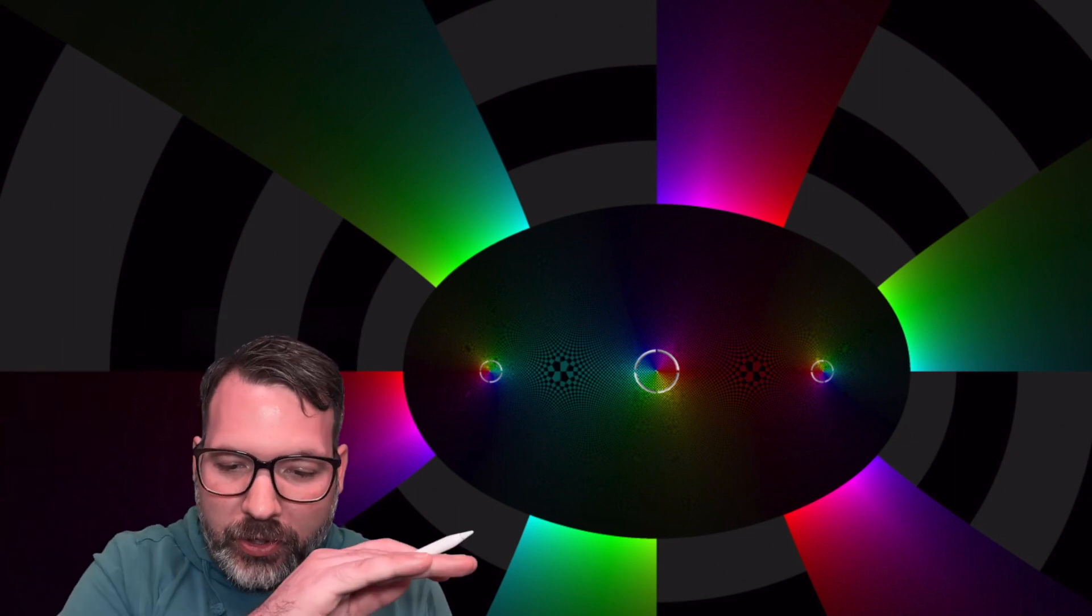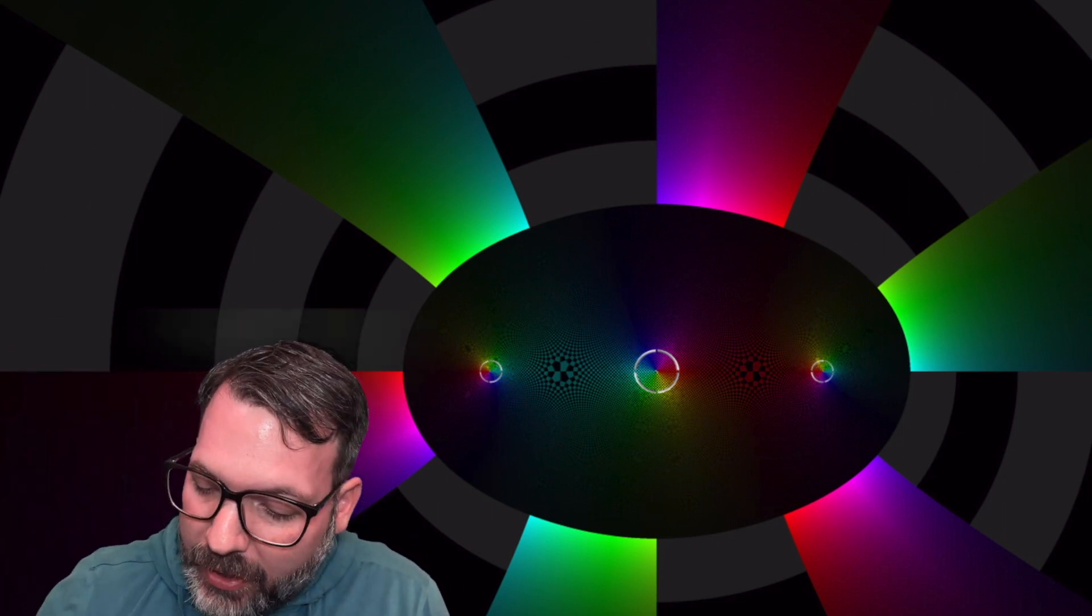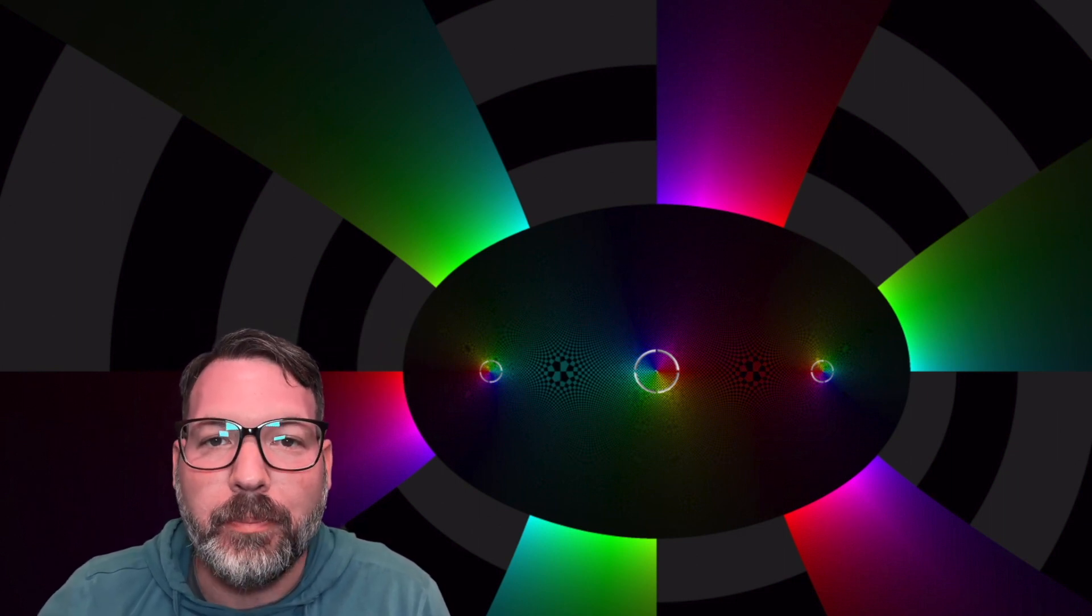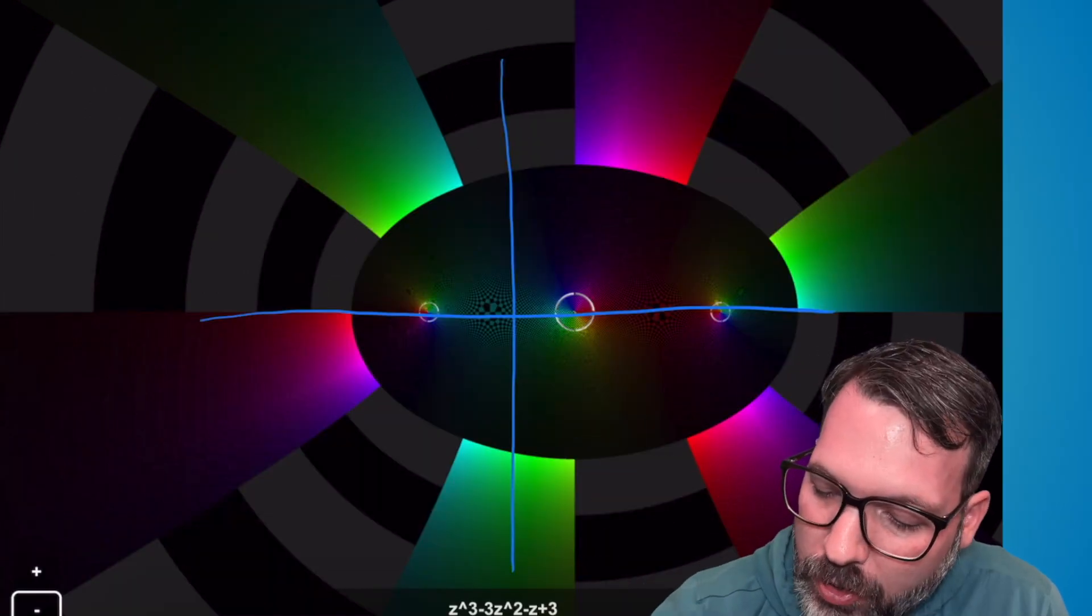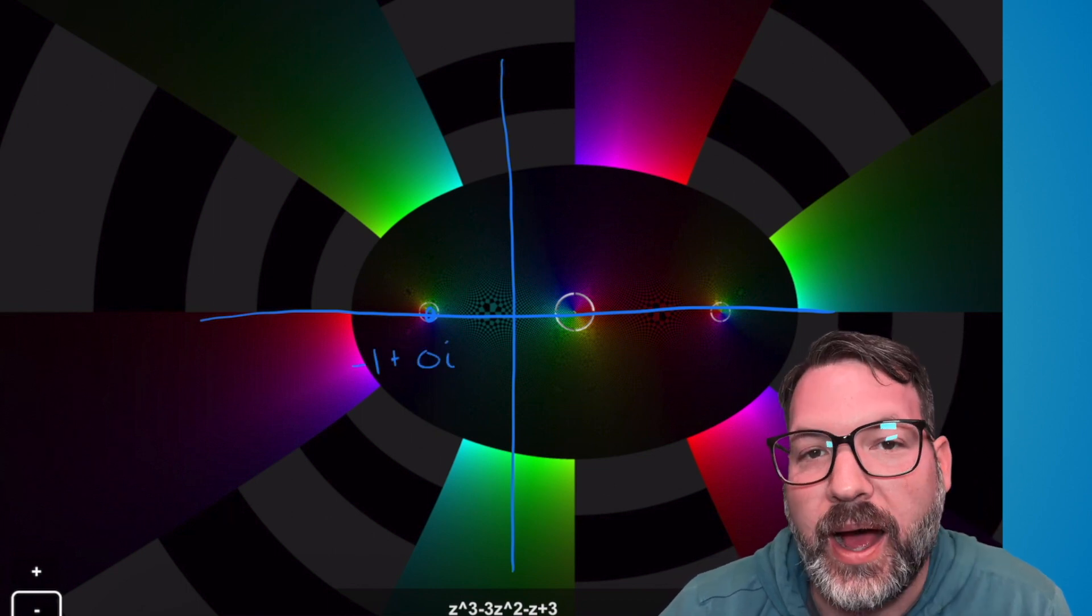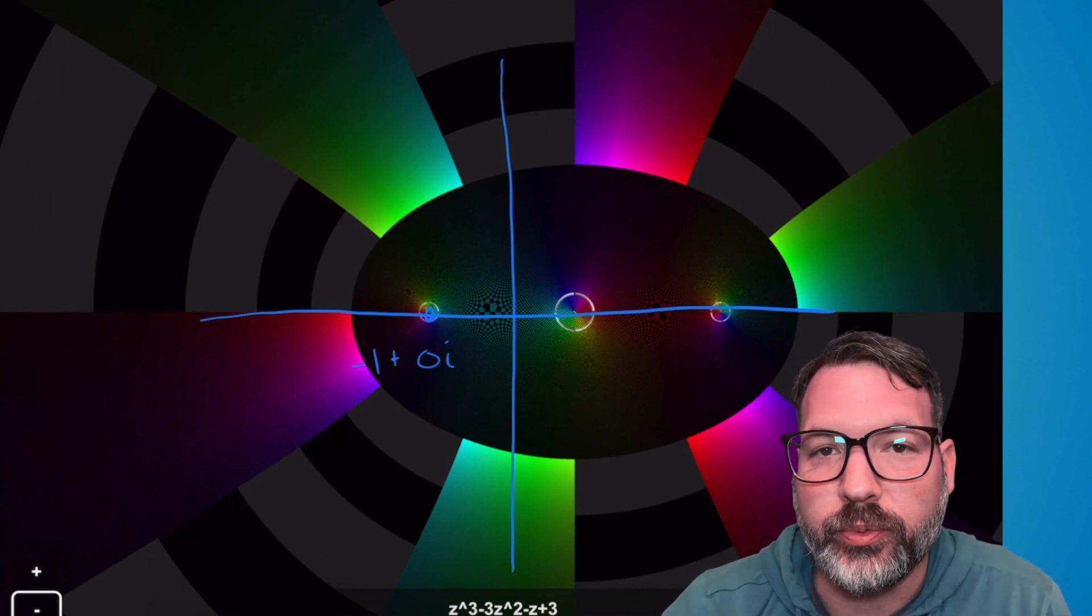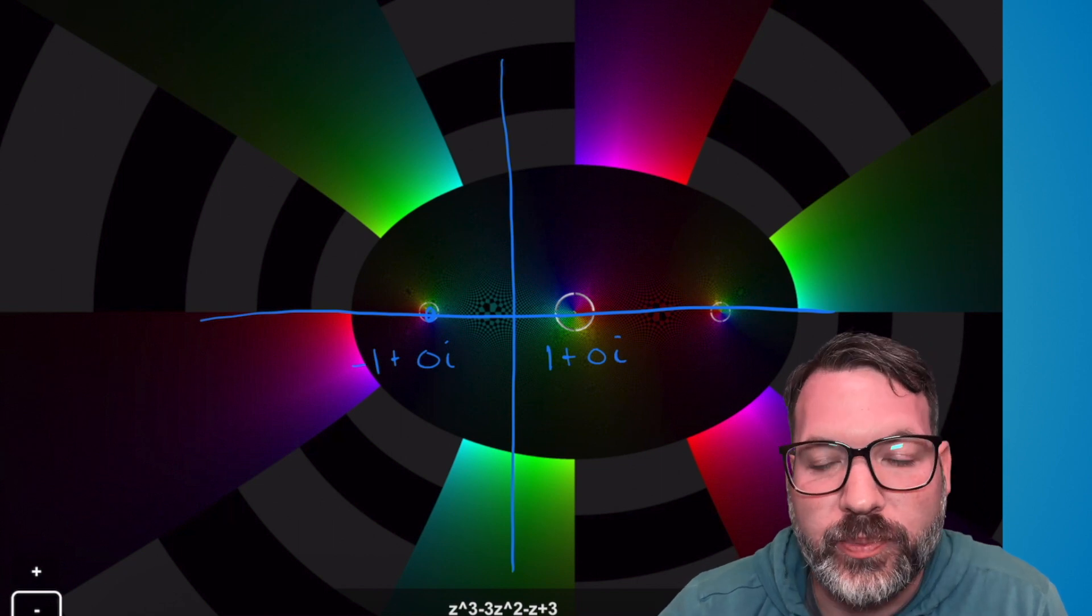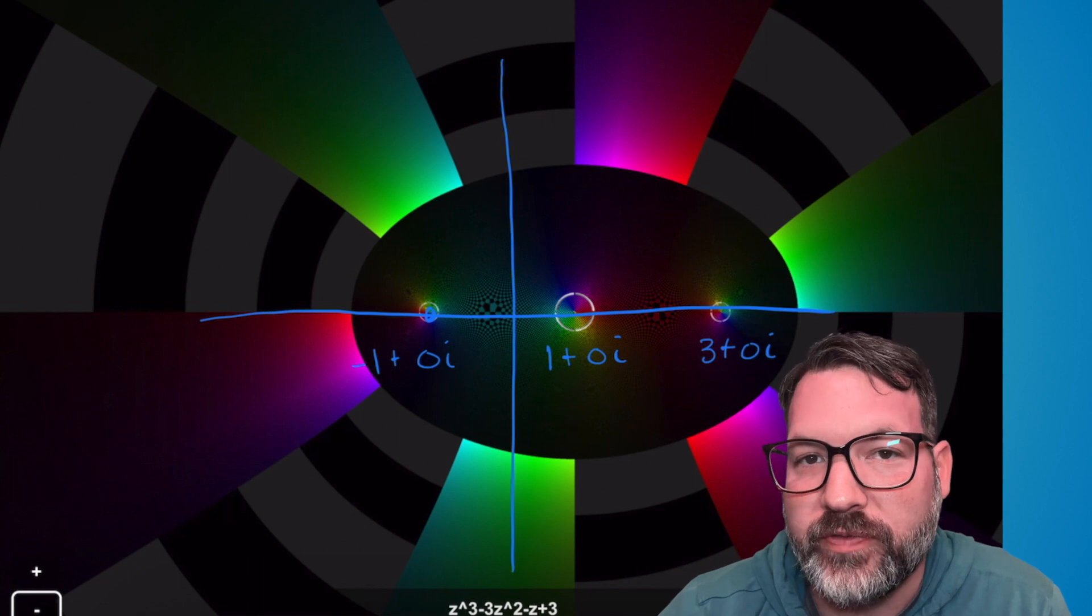This means essentially, rather than look at a number line for our inputs, we're now looking down on top of a plane. You can see that plane here for that same cubic we were looking at earlier, x cubed minus 3x squared minus x plus 3. Looking down at our inputs now, we can see the real number negative 1 plus 0i. So when I'm along that real axis, my imaginary part is 0. And that was one of the roots of this particular cubic. And then 1 plus 0i would be this root here. And then over here, 3 plus 0i was the third root of that initial cubic.